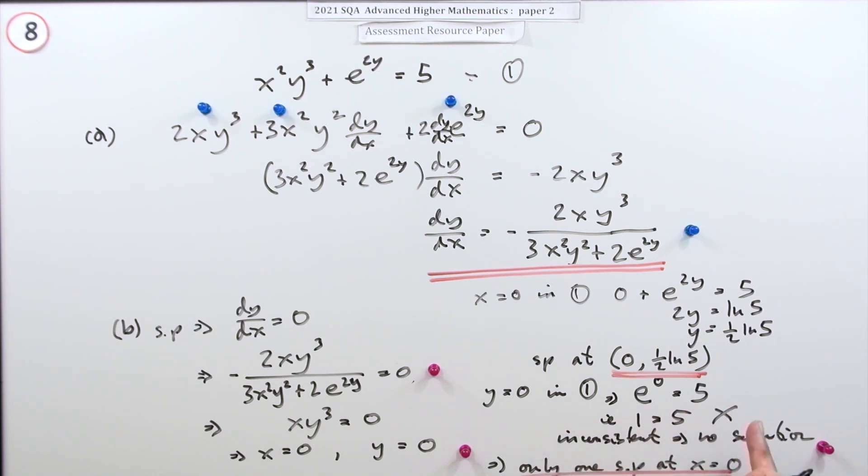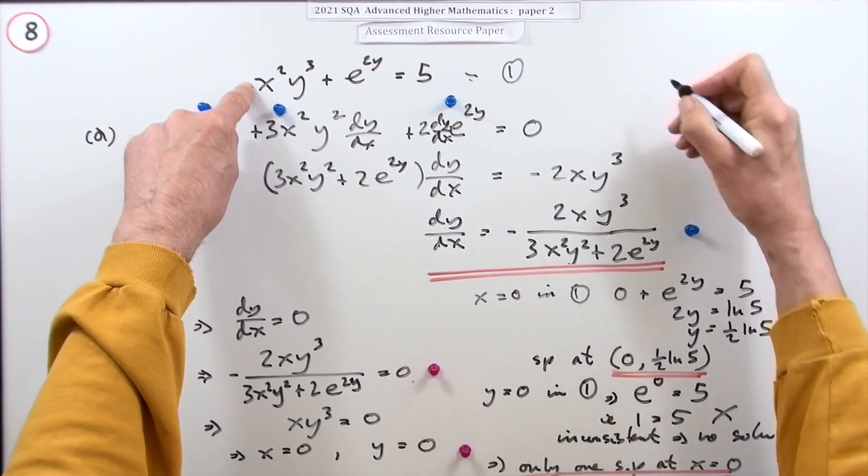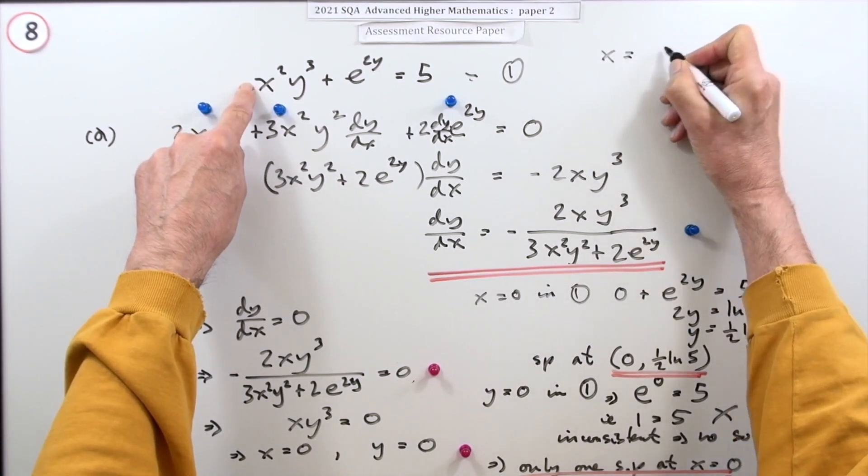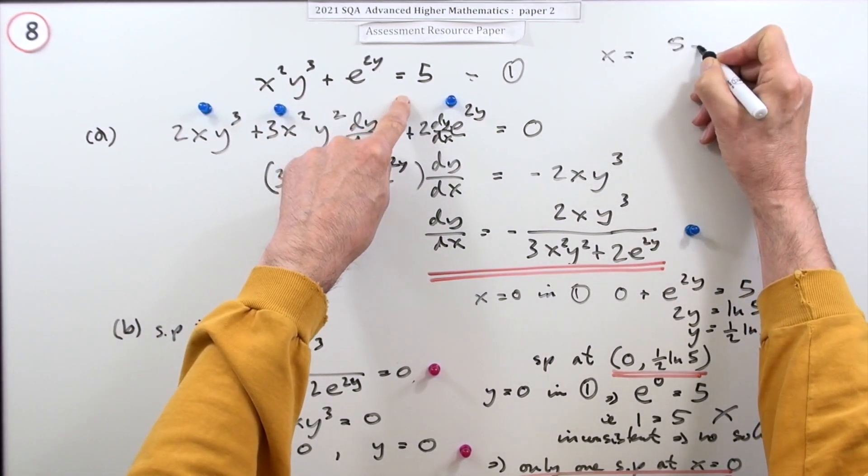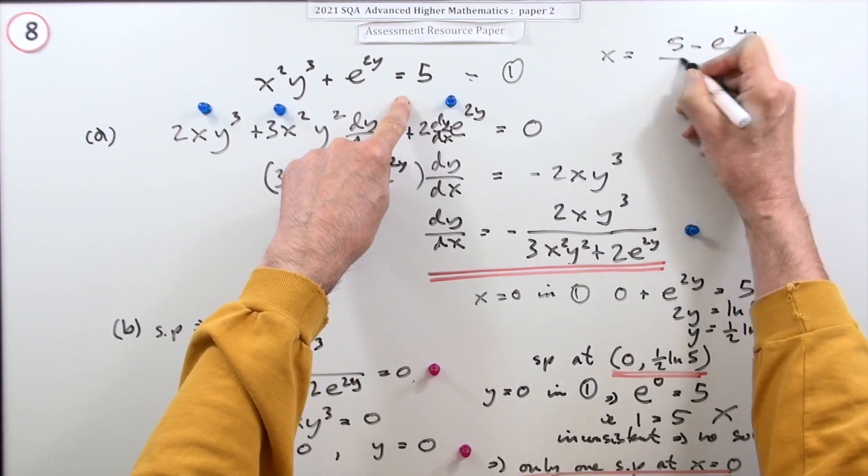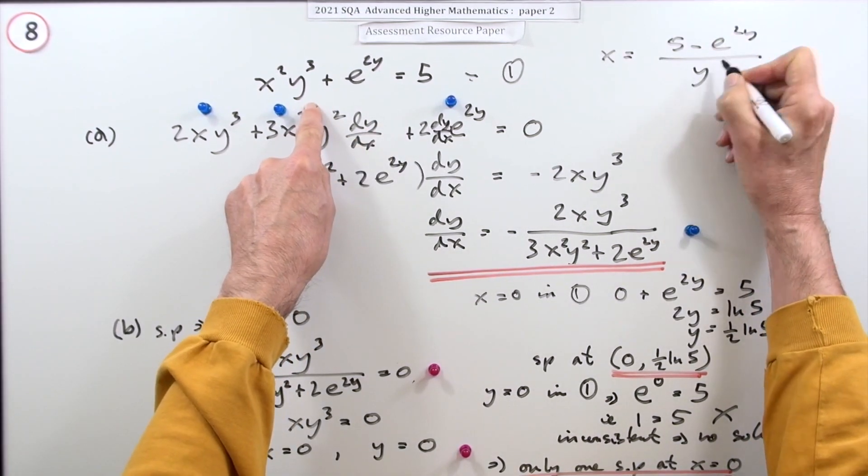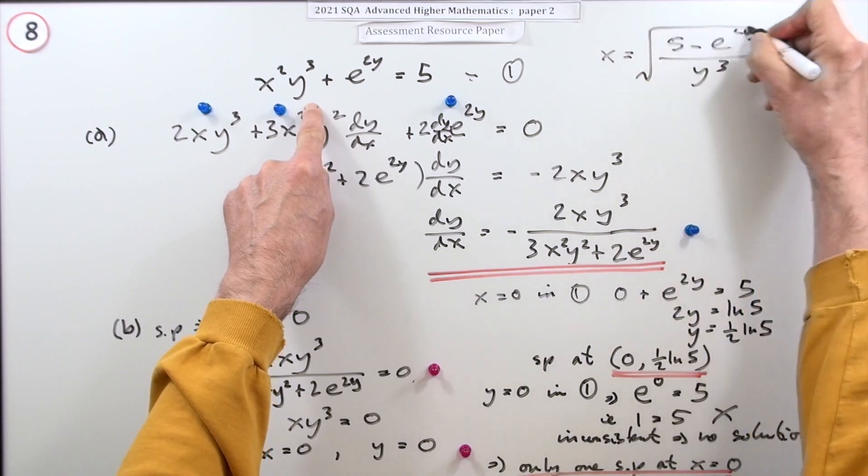So why is this seemingly unsatisfactory when you've got something inconsistent? Well, this equation could be rearranged. That could be written as x equals the square root of (5 - e^(2y)) / y³.